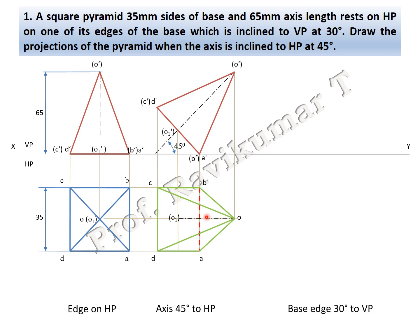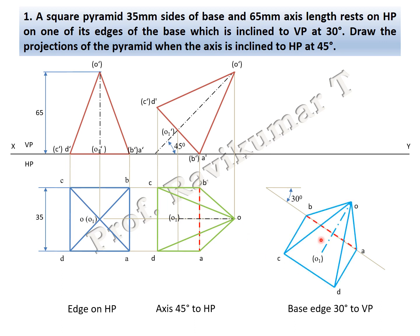Third position: edge of the base is inclined to VP at 30 degrees. Take 30 degrees and place the edge on the inclined-to-VP line. The same naming is copied. A very common mistake students make is inclining the axis to VP at 30 degrees — that is wrong. You must place only the edge. Then drop projection lines upward.